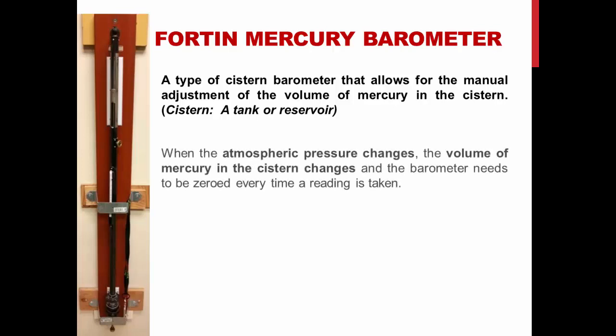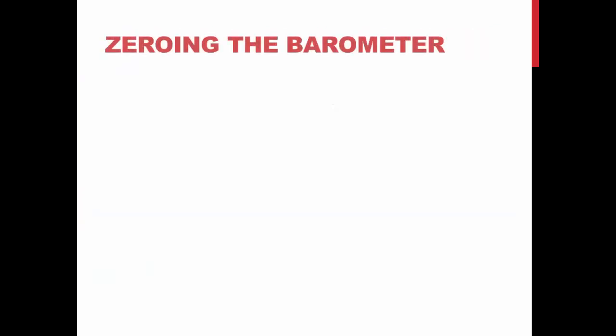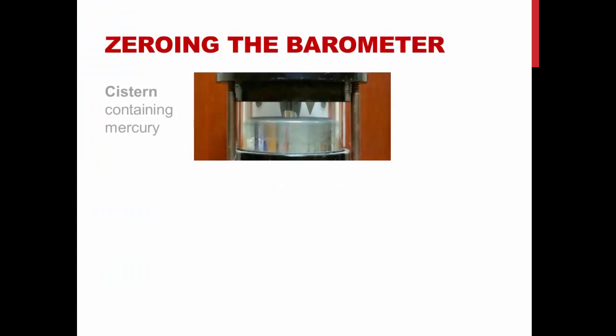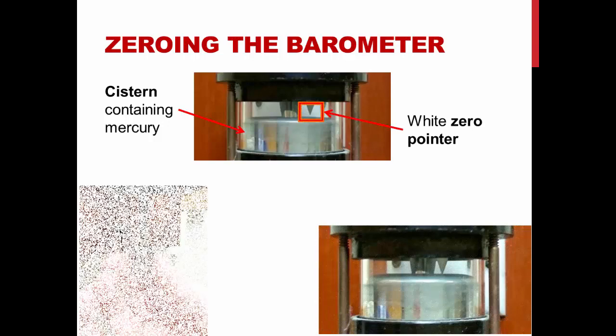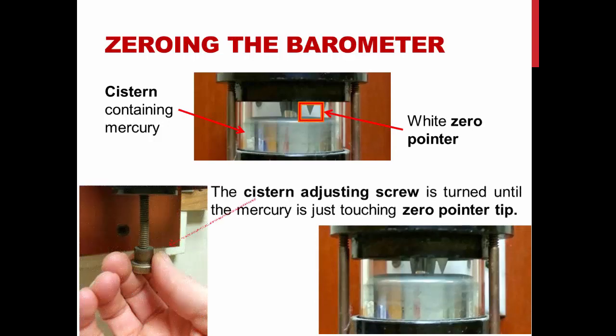When the atmospheric pressure changes, the volume of mercury in the cistern changes and the barometer needs to be zeroed every time a reading is taken. In the top picture of this slide, you can see the cistern containing mercury and the white zero-pointer. The bottom picture depicts the cistern adjusting screw being turned until the mercury is just touching the zero-pointer tip.